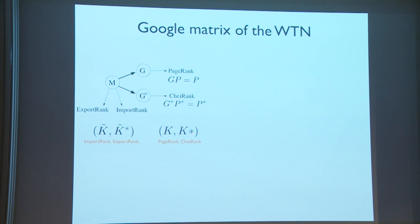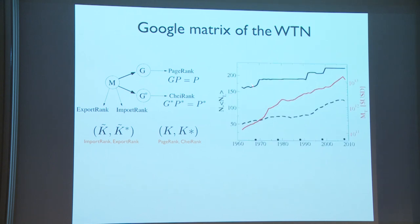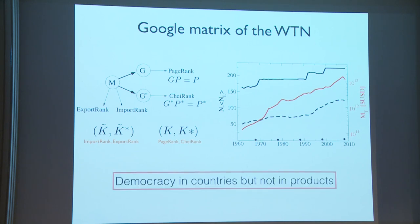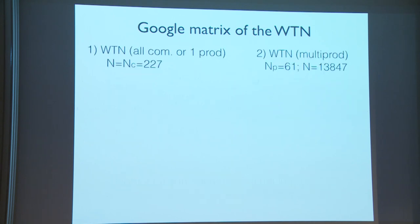From the data, we see the number of countries evolves over time, with more countries created since the 1960s. The amount of money, shown in logarithmic scale, grows more or less exponentially, and the average number of links also increases due to globalization. We want to have democracy in countries but not in products — I will explain this in some slides. We will use two different approaches: the first focuses on a small matrix given by the number of countries, and the second builds the multiproduct World Trade Network with 61 products and thus higher dimensionality.